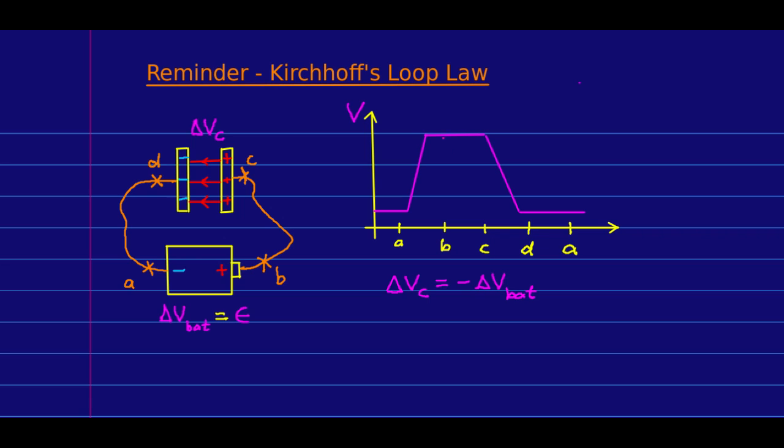And then there's no potential difference across the wires because they are conductors in equilibrium, and then you see a potential drop in the capacitor. You have to get back to the potential you started at, and so the potential difference across the capacitor has to be the negative of the potential difference across the battery. But this is actually just a direct consequence of something we've already seen which is Kirchhoff's loop law. Remember that told you that if you go around any closed loop, the sum of all the potential differences has to be zero.